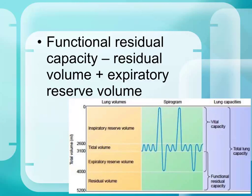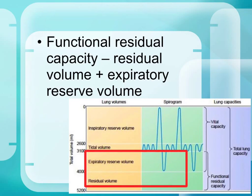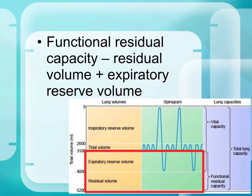The functional residual capacity is the expiratory reserve volume plus the residual volume. During a normal breathing, the functional residual capacity is the amount of air that remains in the lungs.